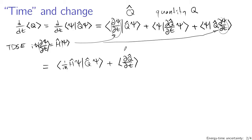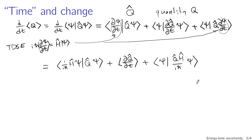For the third term, we can also apply a simplification. We have psi on the left, and on the right we get (1/iħ) with Q-hat and H-hat acting on psi. Now, the next step is to use the fact that H-hat is a Hermitian operator. Instead of having H act on the left-hand side of the inner product, we can move it to act on the right. This gives us an H-hat Q-hat term, similar to the Q-hat H-hat term from the first part.